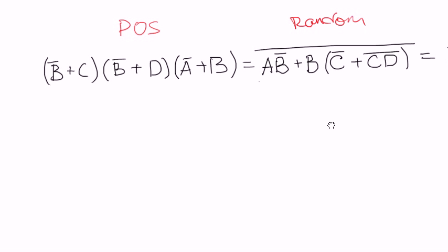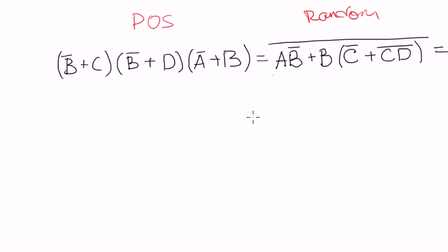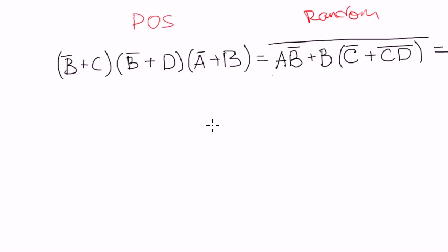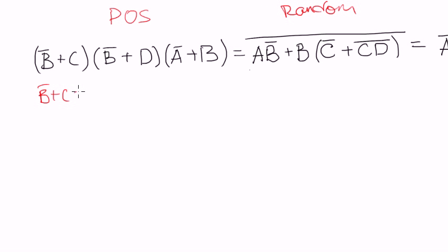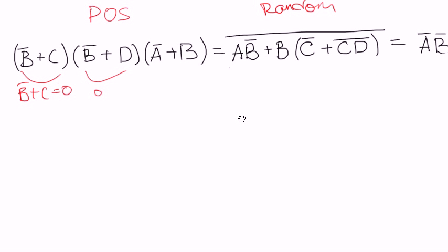Now look at the product of sums form. In this case, if any of the terms equals to 0, then because of multiplication by 0, the whole expression will equal to 0. That's also pretty useful. We can evaluate this product of sums expression as easily as sum of products. If b-negated plus c equals to 0, then the whole expression equals to 0. It's as easy as sum of products, but it looks really different.